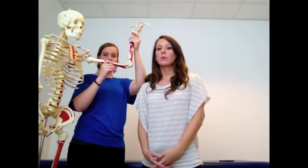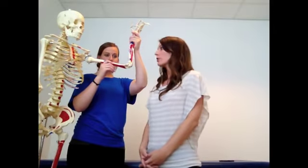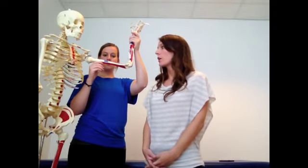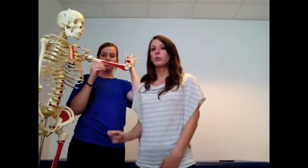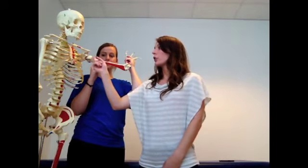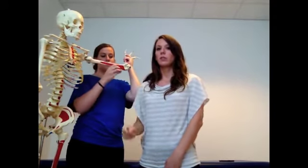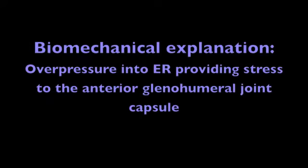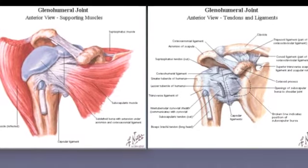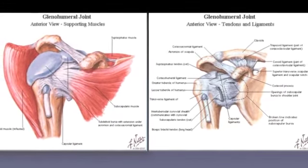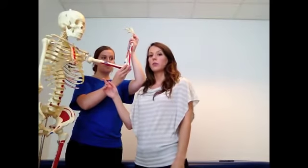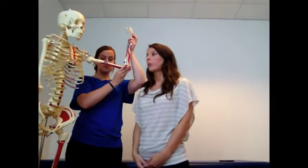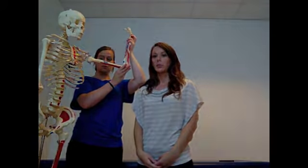This test is performed by providing an external rotation and abduction moment to the glenohumeral joint, in which there is an anterior glide from the external rotation and pressure being put on the anterior capsule of the glenohumeral joint. By doing this maneuver, we are determining if there is appropriate stability and integrity of the anterior joint capsule.